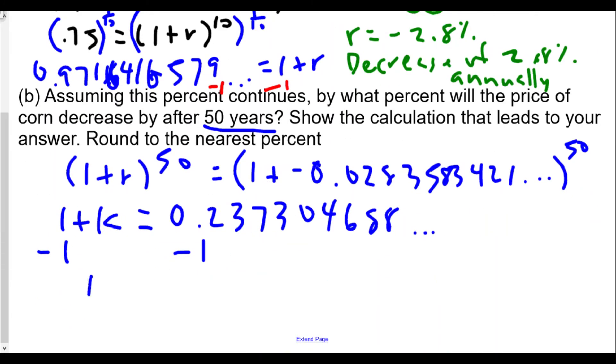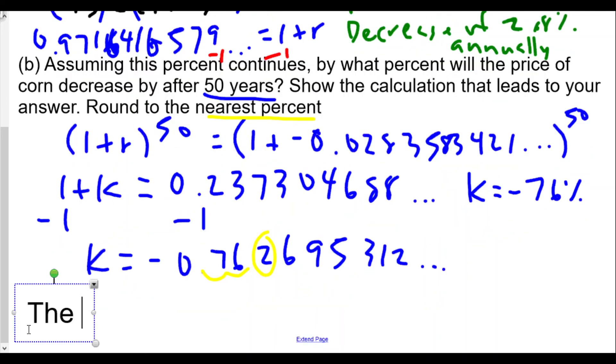So our new k value will be negative 0.762695312. To change to percent, we do a decimal slide. Rounding to the nearest percent, we're looking at this 2, not enough to round up, so our percent change k equals negative 76 percent, or we would say the percent decrease.